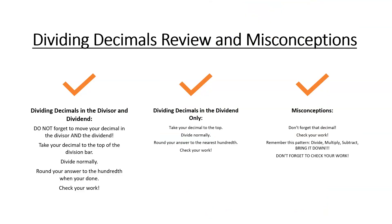Let's wrap it up with a review and misconceptions for dividing decimals. First, when dividing with a decimal in both the divisor and dividend: move your decimal in both, take your decimal to the top of the division bar, divide normally, round your answer to the hundredths place, and use inverse operation — multiplication — to check. Second, when dividing with a decimal only in the dividend: take your decimal to the top, divide normally, round to the nearest hundredth, and check your work. Finally, misconceptions: don't forget the decimal, check your work, and remember the pattern — divide, multiply, subtract, bring it down. This concludes our video on dividing decimals. Thank you for watching.